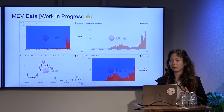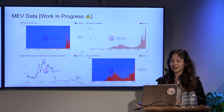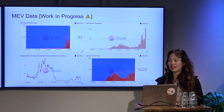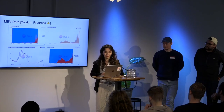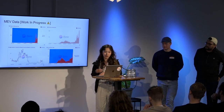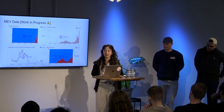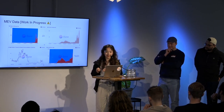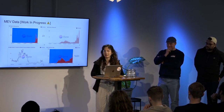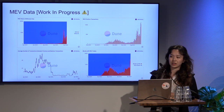They can submit their trade before it, and then maybe a backrun after it — essentially catching that transaction. Before POS, they would try to raise their gas price and put their trade exactly in the position they want to make some profit. The biggest bad thing is it causes gas congestion for the Ethereum network.